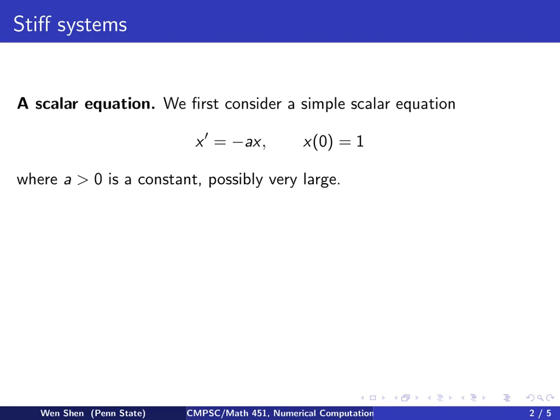If you've had a sophomore-level ODE course or calculus, you'd know this equation describes exponential decay where a is the rate of decay. The exact solution is x(t) = e^(-at). The initial condition x(0) = 1 gives the coefficient 1.